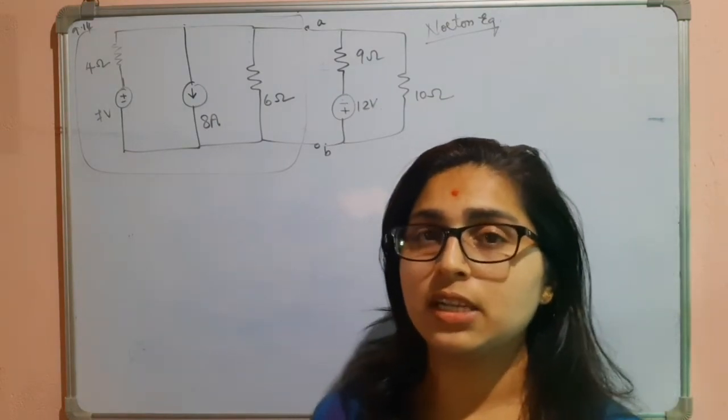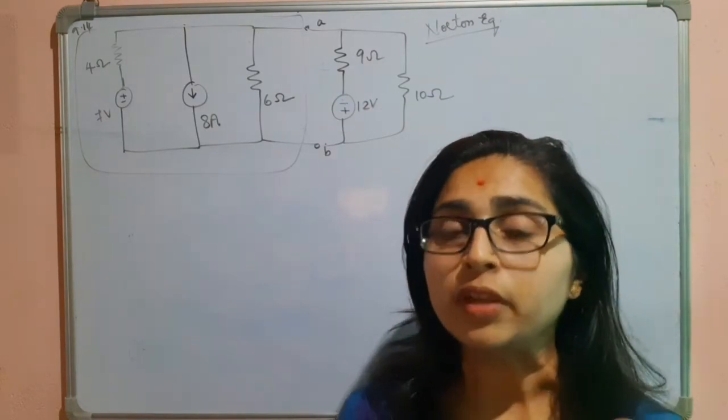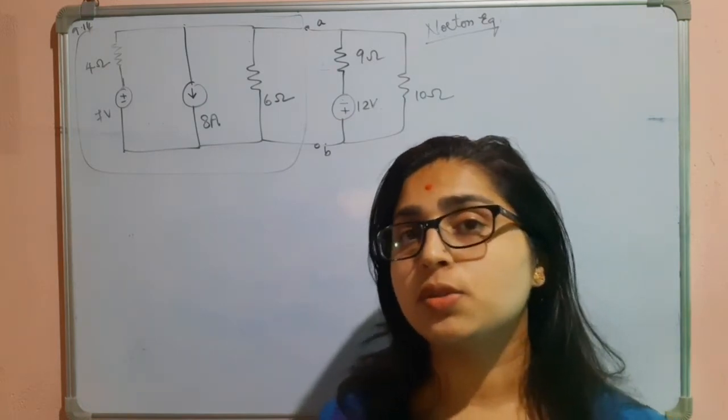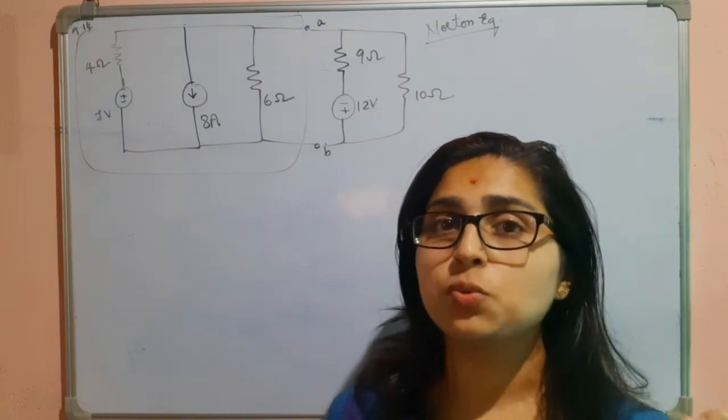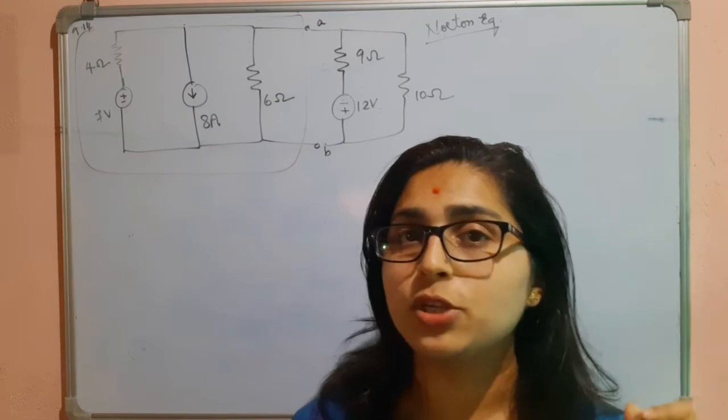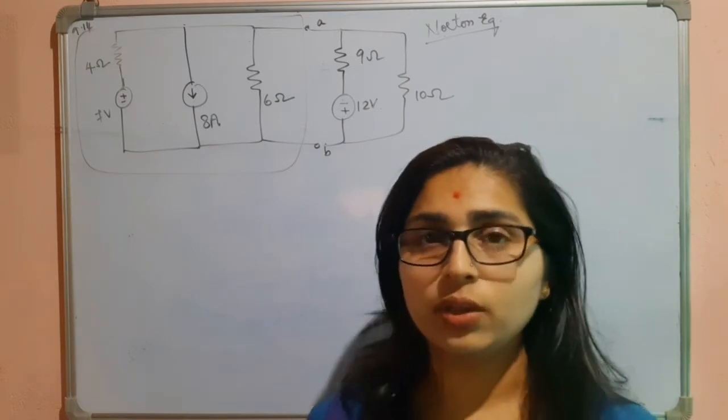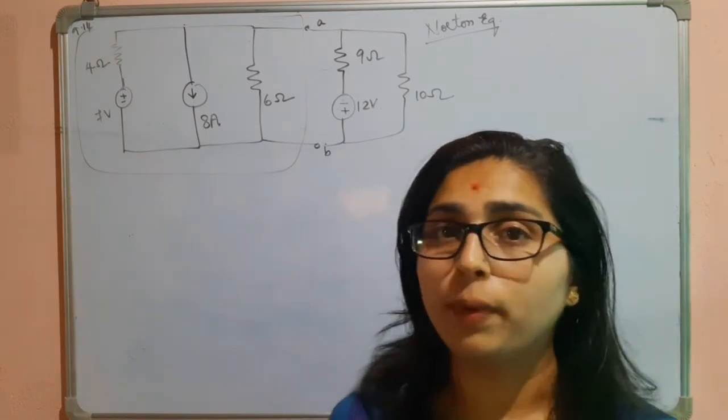To find the Norton's equivalent, first let us find the Norton's resistance. In this case, the independent sources should be made zero. That means voltage equals zero means it should be shorted. Current equals zero means the current source should be made open.